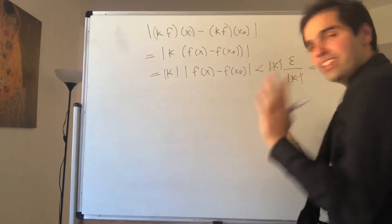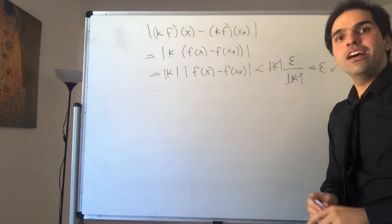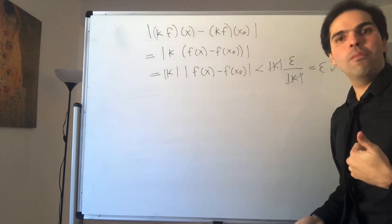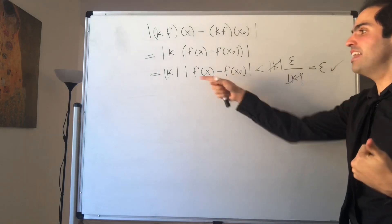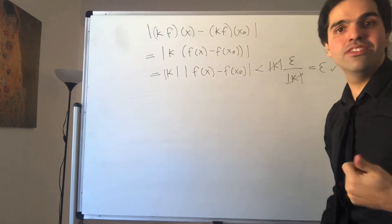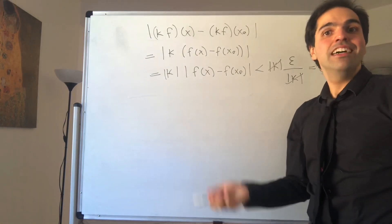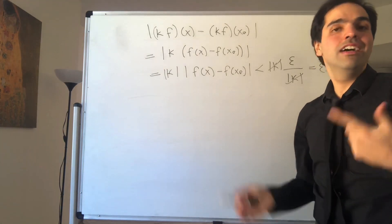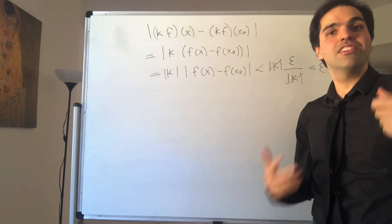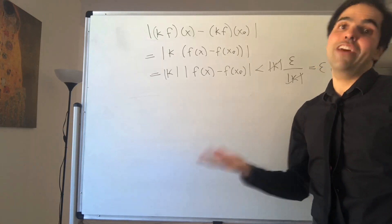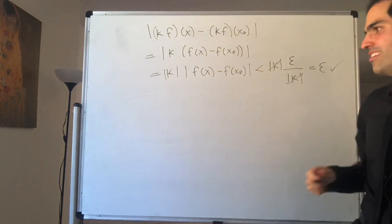We've shown the sum of continuous functions is continuous, and the scalar multiple of a continuous function is continuous. So if you know some linear algebra, it follows that the set of continuous functions forms a vector space — a very good set to consider.